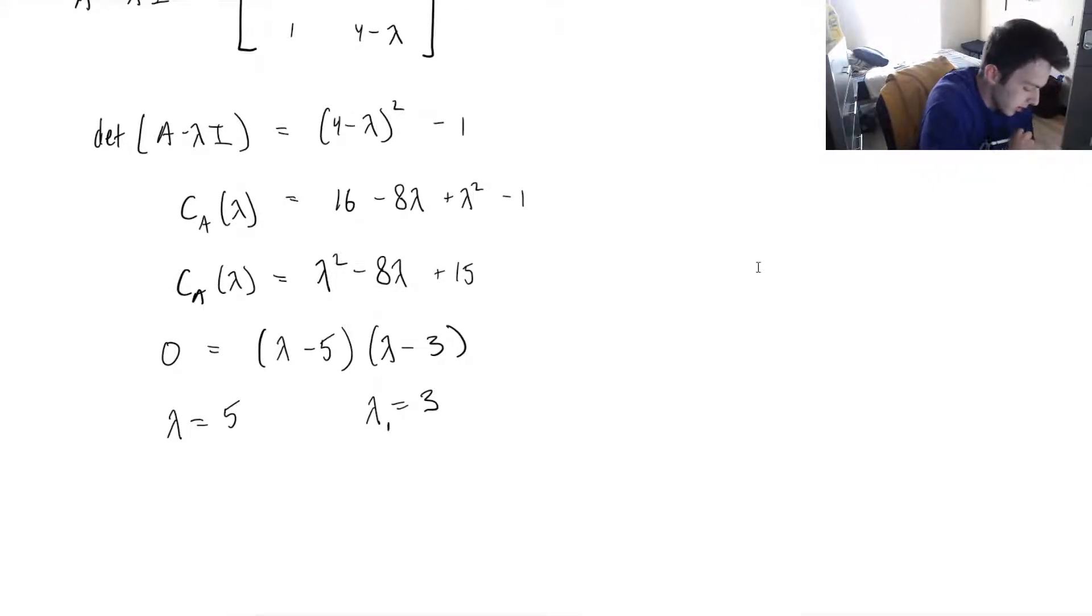I usually call the lower one lambda 1, the second, and then in increasing order I do lambda 2, lambda 3, etc. So this is lambda 1 and lambda 2. And we can actually tell already that this is diagonalizable because our eigenvalues are unique. They have an algebraic multiplicity of 1. See how they're both different and don't repeat themselves, so it will be diagonalizable.